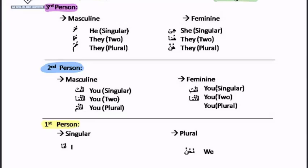You should keep repeating these words: huwa, huma, hum, hiya, huma, hunna, anta, antuma, antum, anti, antuma, ana, nahnu.